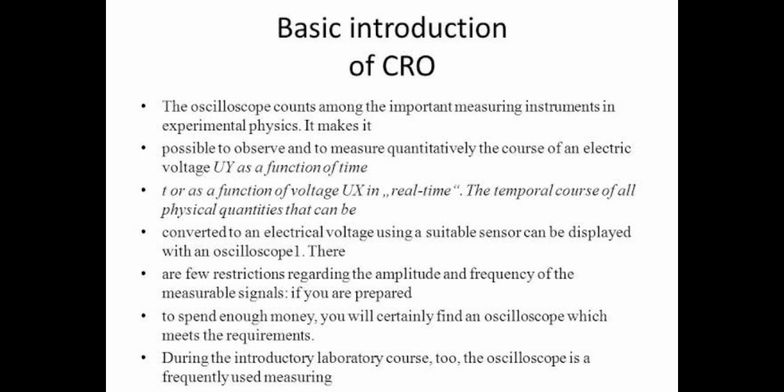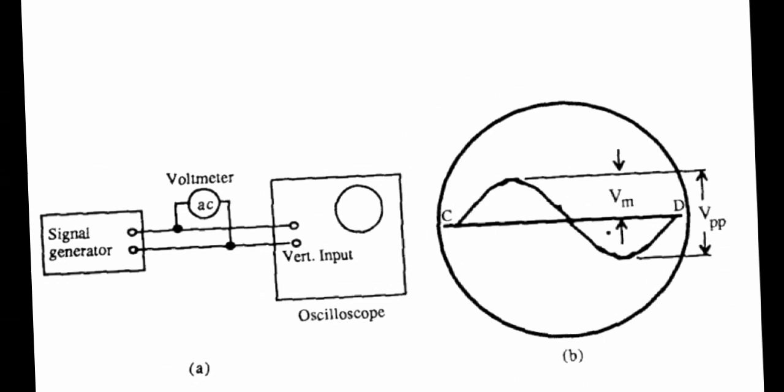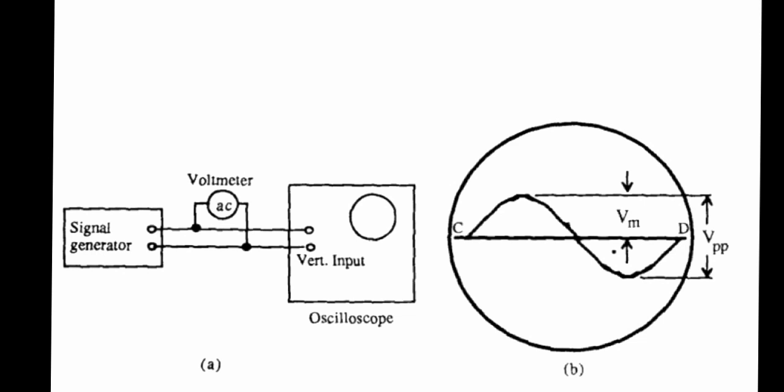For measurable signals, if you are prepared to spend enough money, you will certainly find an oscilloscope which meets your requirement. During introductory laboratory courses, the oscilloscope is frequently used. This diagram shows the signal generator provided through the voltmeter, which is connected to the oscilloscope.